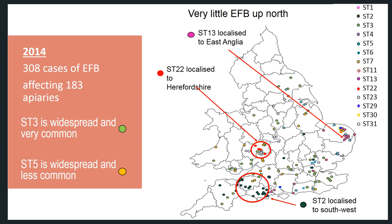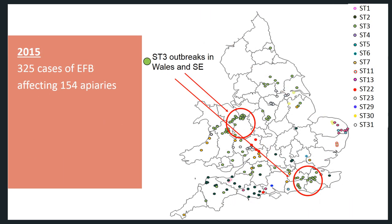In England and Wales in 2014, we observed 308 cases of EFB — this is the number of hives from which an EFB sample was collected. It is often the case that multiple hives in an apiary are infected, because the chances of contracting EFB increase with proximity to an infected hive. The cases found that year were in 183 apiaries. In 2015, 325 cases of EFB were observed affecting 154 apiaries. We can see something interesting happen in 2015 with strain type 3 (light green dots) — in the south-east of England and in the north of Wales, there were two separate outbreaks of this strain type.